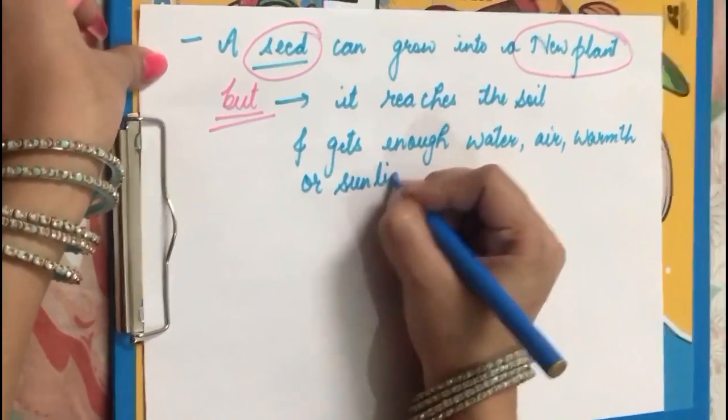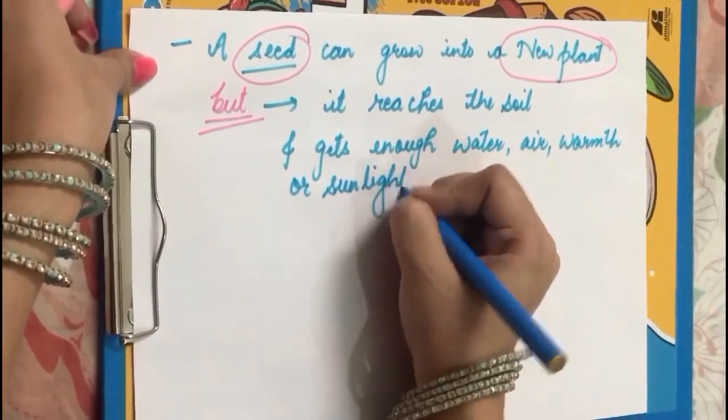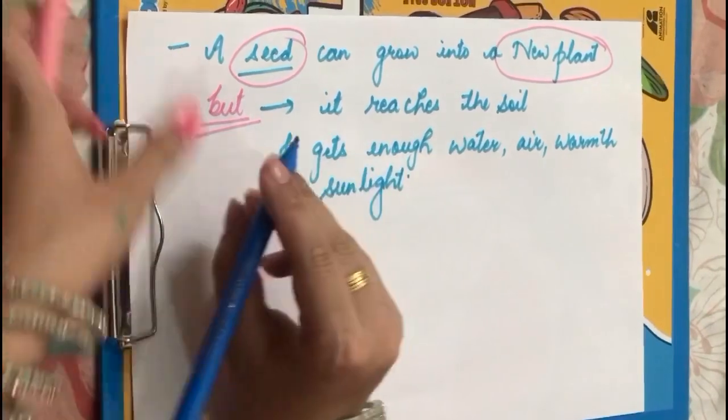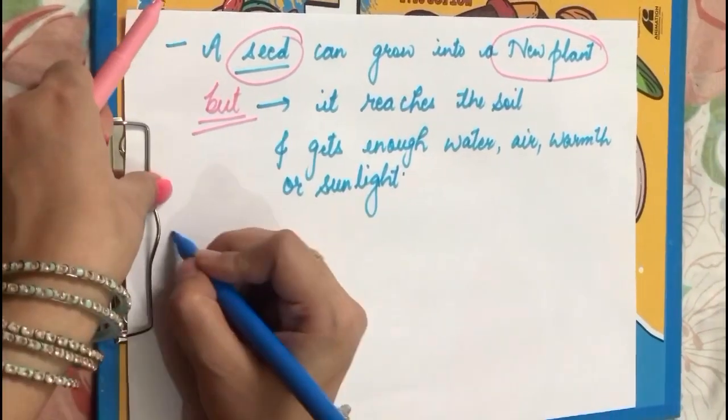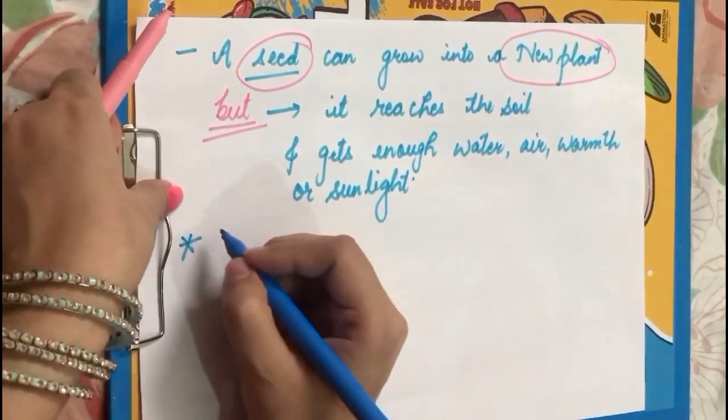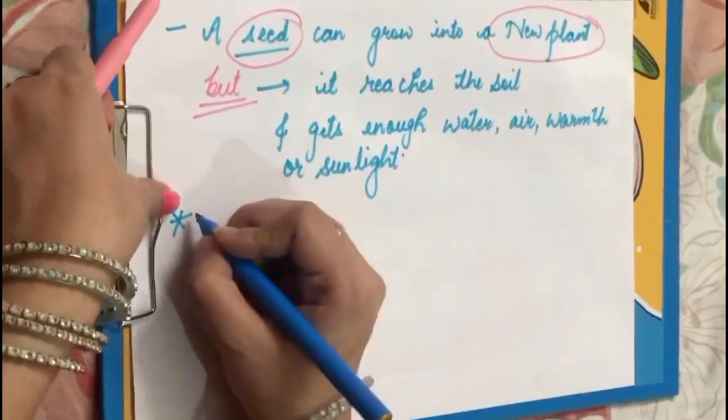Fourth point: a seed can grow into a new plant — but only and only when it reaches the soil and gets enough water, air, warmth, or sunlight. This we have already done. Now let's get started with our new topic.